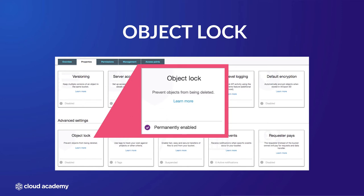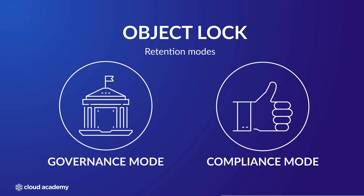When you select the object lock tile, which will now say permanently enabled, you will also be presented with two retention modes. The settings selected here will define the default retention of an object when it is added to the bucket, therefore applying the required protection that object lock provides. These retention modes are governance mode and compliance mode.